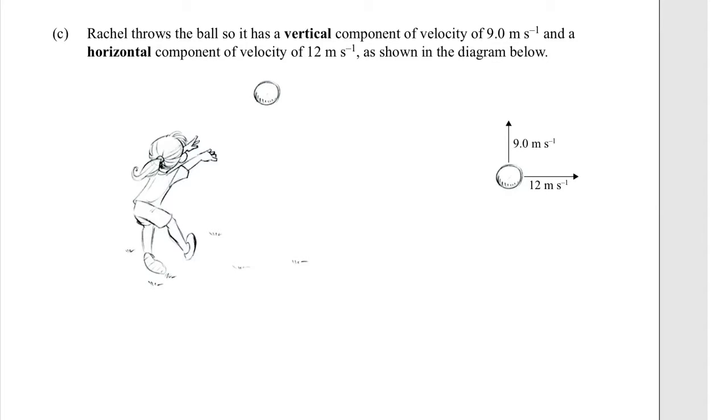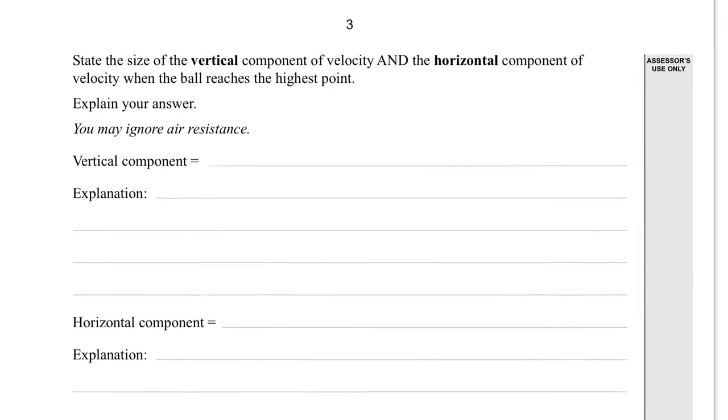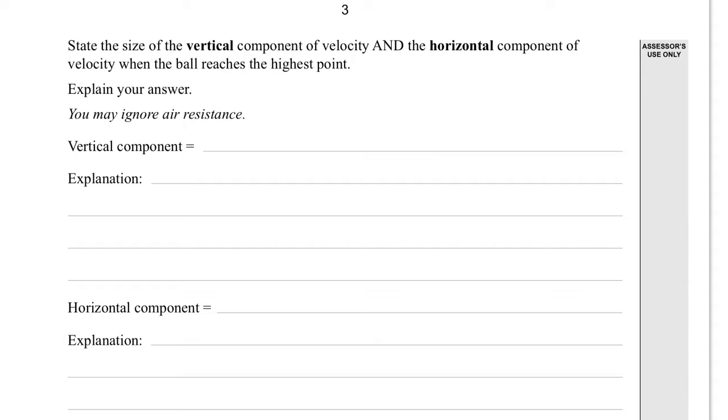Part C. Rachel throws the ball so it has a vertical component of velocity of 9.0 meters per second and a horizontal component of the velocity of 12 meters per second, as shown in the diagram below. So the ball is going up on this sort of an angle, and it's got 9 upwards and 12 to the right. State the size of the vertical component of the velocity and the horizontal component when the ball reaches the highest point.